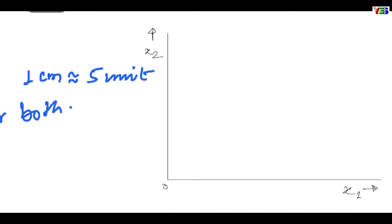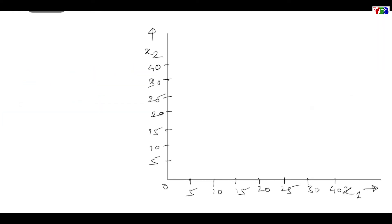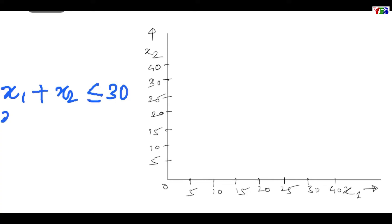For this problem, let us take scale as 1 cm equal to 5 units for both x1 and x2. One can take different scales for different axes as per the need. Now let us draw a line for our first constraint, which is x1 plus x2 less than or equal to 30. To draw a line for this equation, let us consider only the equal to sign, that is x1 plus x2 equal to 30.